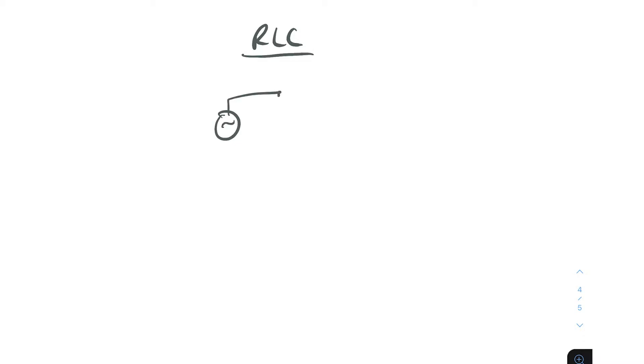In this video, we'll be going through an RLC circuit, which is a circuit that consists of a resistor, inductor, and a capacitor. We'll start off with an AC waveform, resistor, and capacitor.